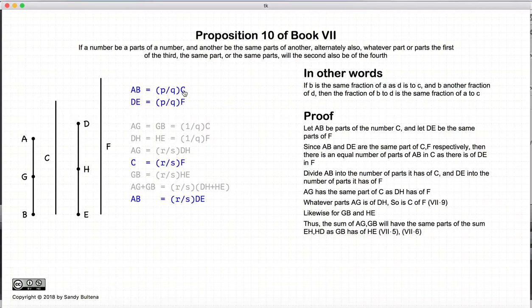So we have demonstrated that if AB is some fractions of C, and DE is the same fractions of F, so this is our starting condition, now C will be some other fraction of F, and if that is so, then AB will also be the same fractions of DE. And that is our proof.